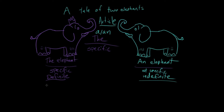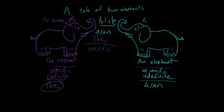When you know who and what you are talking about for sure, you say the. And when you're not sure, you say a or an. So if you knew that you were talking about a specific elephant — say, for example, the queen of the elephants, the queen — as indicated by her royal crown, you would say the. And if you were talking about any old elephant, you'd say an. You'd use the indefinite article.